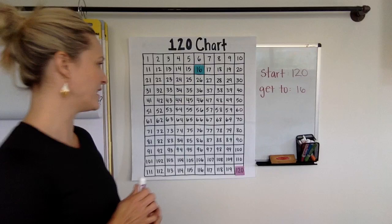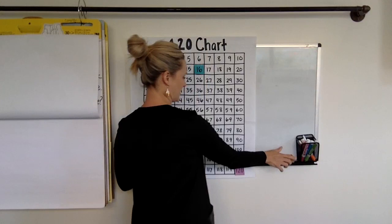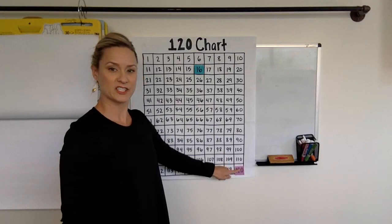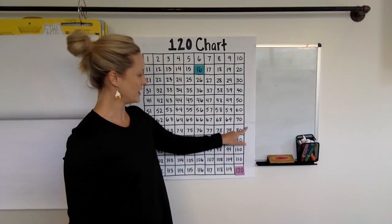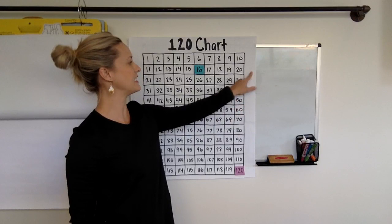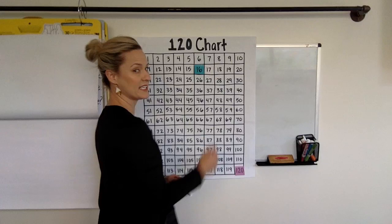Okay, so maybe you started at 120 and you counted, jumped up by hops of 10. So let's check out how many hops of 10 we would have to take. Let's see. Ready? One hop of 10, that would be 10, 20, 30, 40, 50, 60, 70, 80, 90, 100. So if you went from 120 to 20, you had to jump 100, otherwise known as 10 hops of 10.